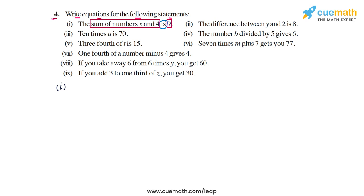So this is how you have to think in each part. The sum of numbers x and 4 can be written as x plus 4, and the RHS is 9. So the equation becomes x plus 4 equal to 9. Quite straightforward.